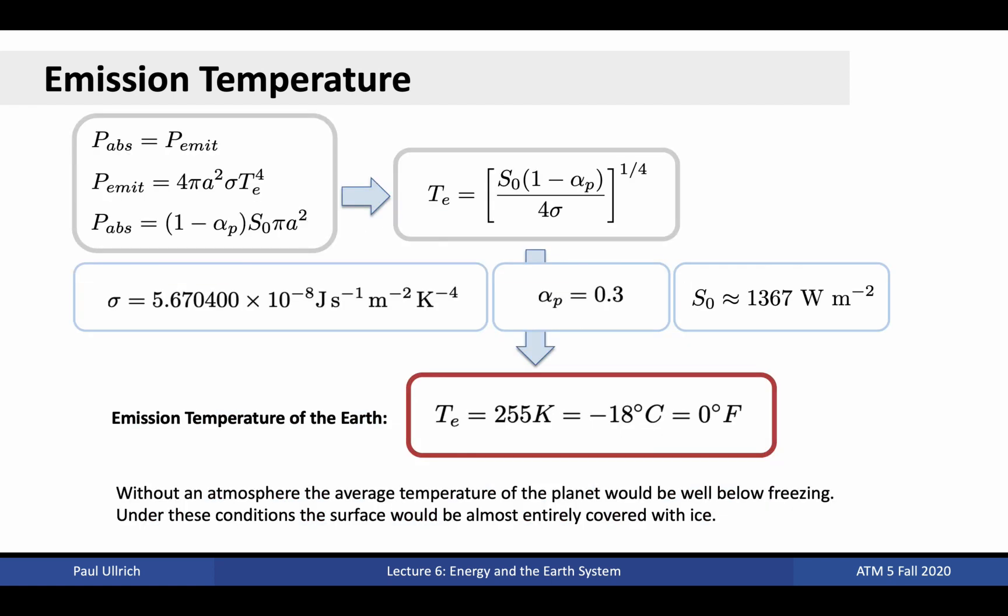I'll spare you the gory details on the math, but they're shown here for anybody so interested. The basic result is that without an atmosphere, the planet would be at 255 Kelvin, negative 18 degrees Celsius or zero Fahrenheit. This is obviously pretty chilly and unpleasant. Not only that, but it's well below freezing. Under these conditions, the surface would likely be entirely covered with ice. This state is known as a snowball Earth.